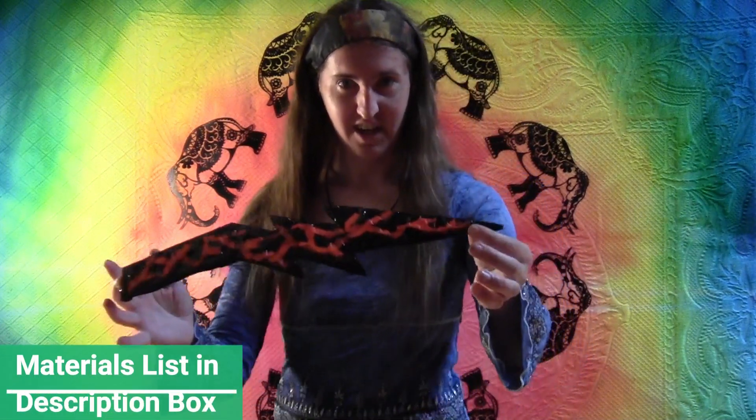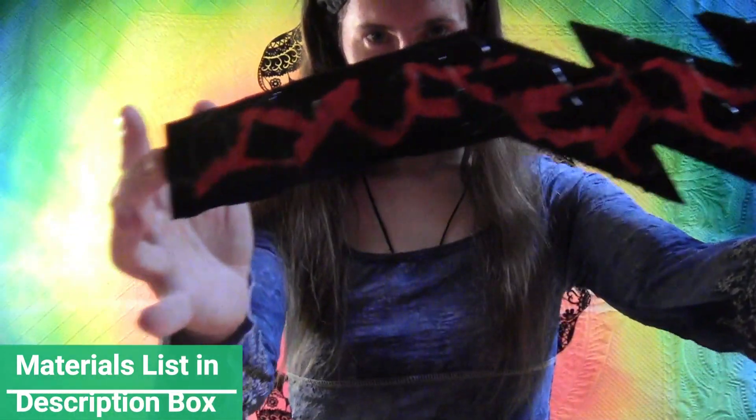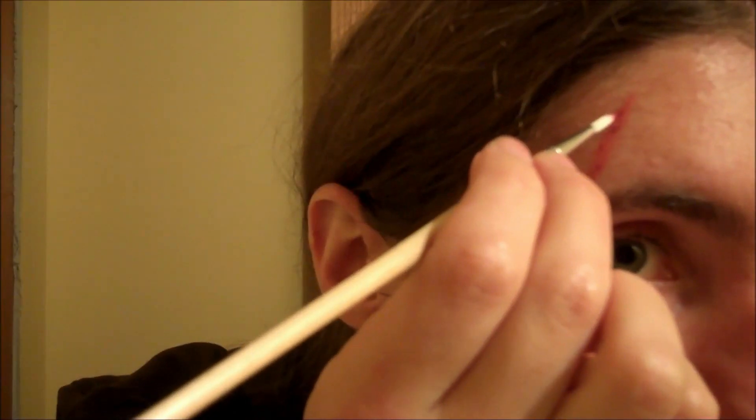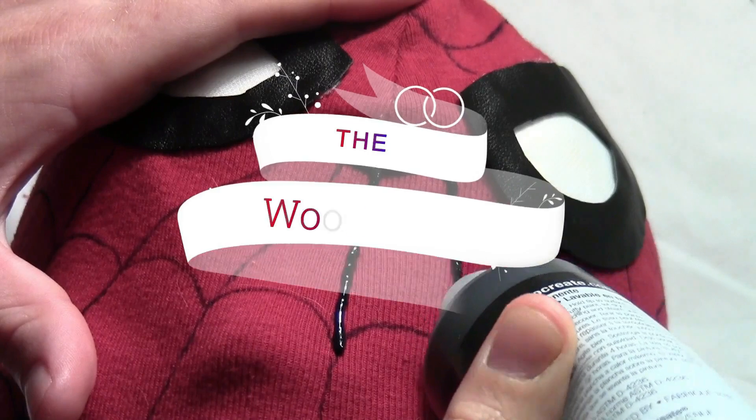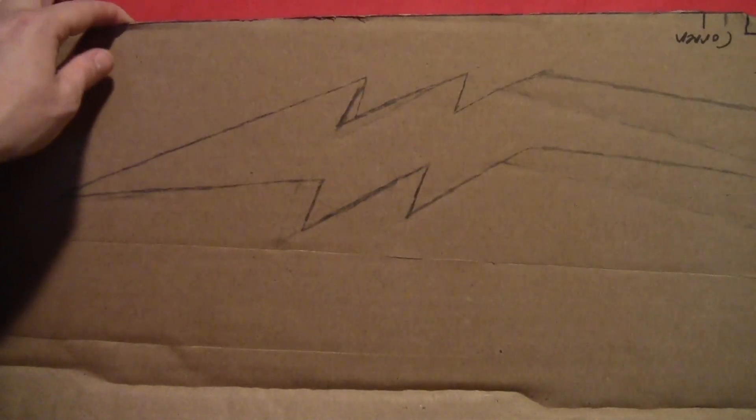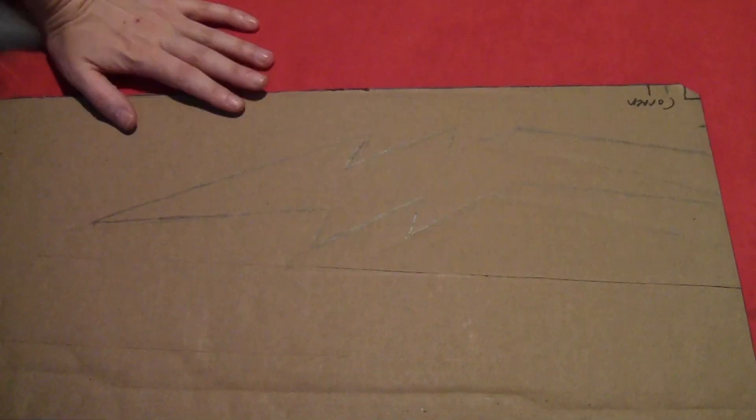So today I'm going to show you how to make Cicada's Lightning Dagger. Start by drawing the dagger onto a piece of cardboard. I do have a template for this in my Patterns Vault if you don't want to draw it freehand.